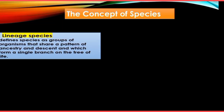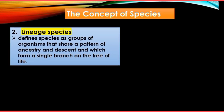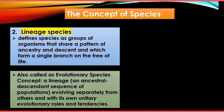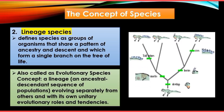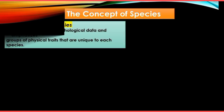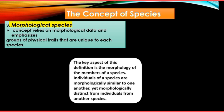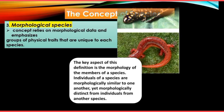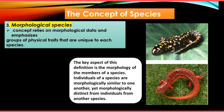We also have lineage species. Kapag sinabi naman natin lineage species, ang ibig sabihin nito ay meron tayong pinagmulan or kanununuan. After several years, nakakaroon ng evolution — kaya nag-branch out from one ancestor to different organisms, but they belong to the same species. Then we have morphological species. When we talk about morphology, it refers to the form or itsura and also anatomy. These organisms might look different but they might belong to the same species.